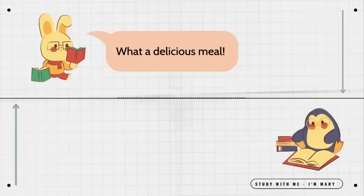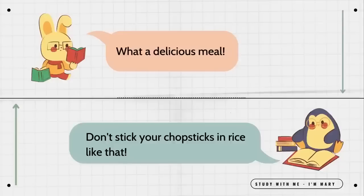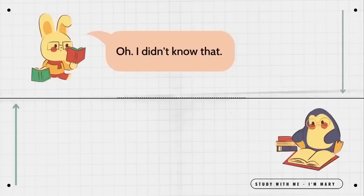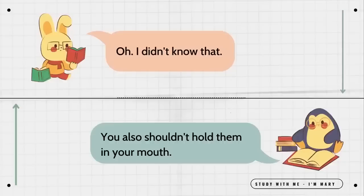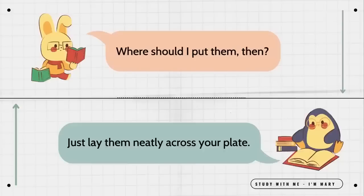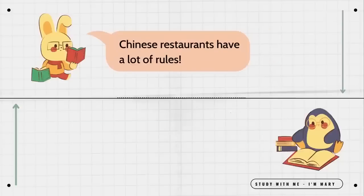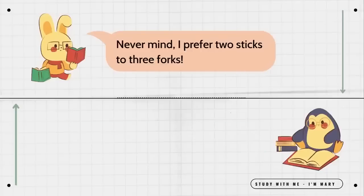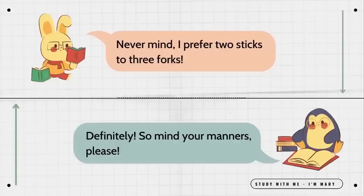What a delicious meal. Don't stick your chopsticks in rice like that. What's wrong with it? It's very bad manners. Oh, I didn't know that. You also shouldn't hold them in your mouth. Where should I put them then? Just lay them neatly across your plate. Chinese restaurants have a lot of rules. Are you kidding? Fancy restaurants have three forks. Never mind. I prefer two sticks to three forks. Definitely. So mind your manners please.